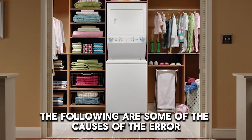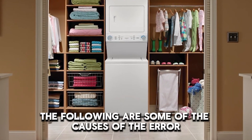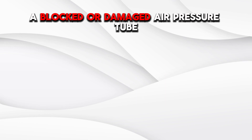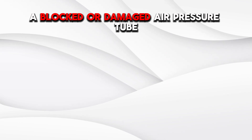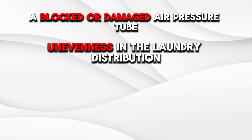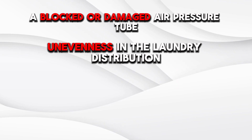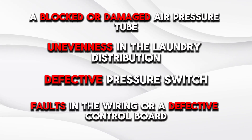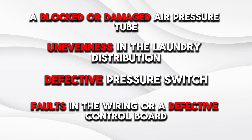The following are some of the causes of the error: a blocked or damaged air pressure tube, unevenness in the laundry distribution, a defective pressure switch, faults in the wiring, or a defective control board.